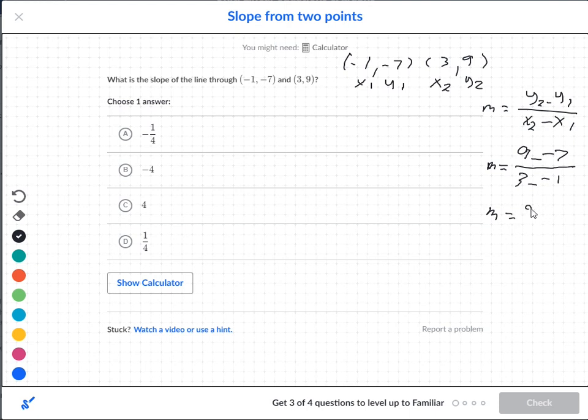So we'll clean up the double negatives and we'll say nine plus seven and three plus one. Okay, we'll do the math on the top and we get 16. And then on the bottom we get four. So now 16 over four can be reduced down to four. So four should be our answer here.